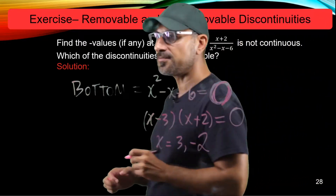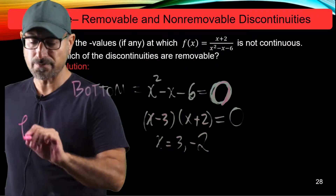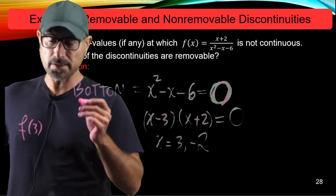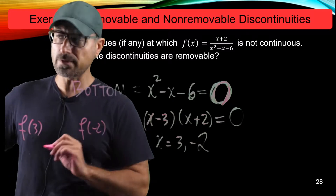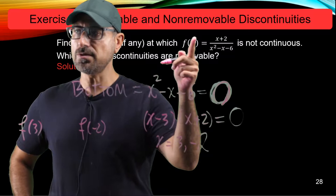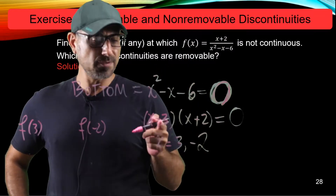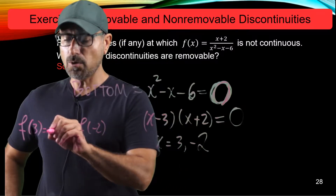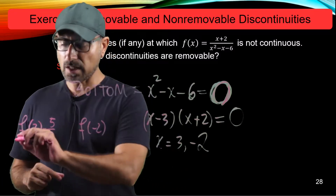Let's check the form of f at these points. At x equals 3, the numerator gives 3 plus 2 which is 5, and since 3 is a zero of the denominator, it's going to be essentially 5 over 0. That makes the function undefined.